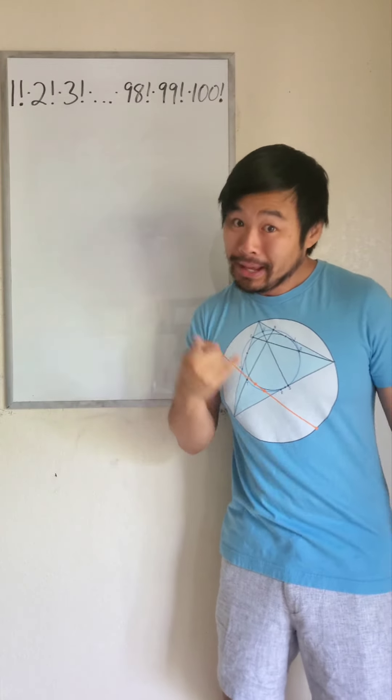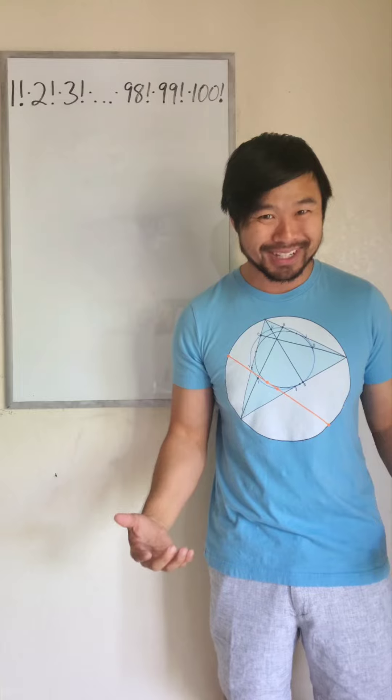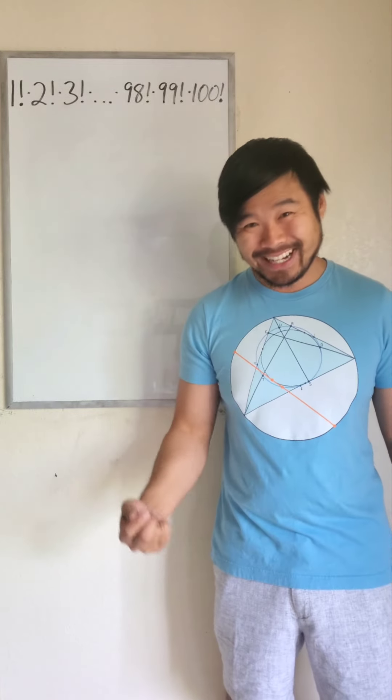This is not a square number, but if we remove one of these factorials, then it will be a square number. So which one should we remove? Let's find out.